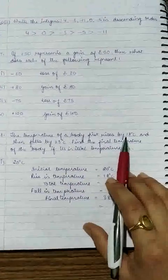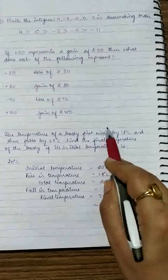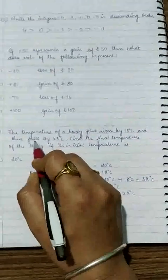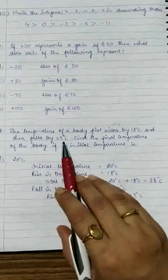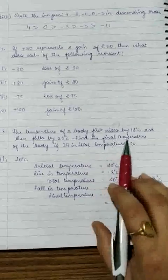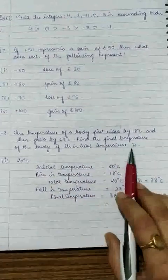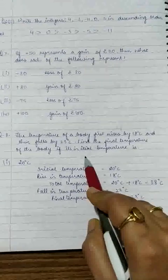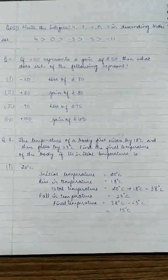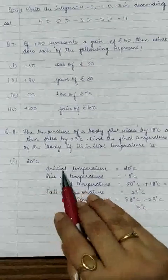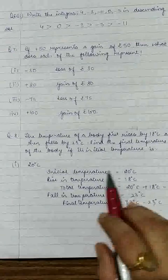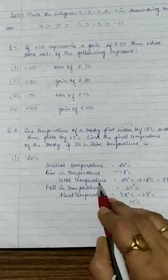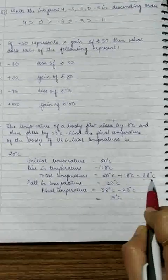Question 8: the temperature of a body first rises by 18 degrees Celsius — rises means plus, so +18 — and then falls by 23 degrees Celsius — falls means negative, so -23. Find the final temperature if the initial temperature is 20 degrees Celsius. The initial temperature is 20°C; rise means +18, so total temperature is 20 + 18 = 38 degrees Celsius.